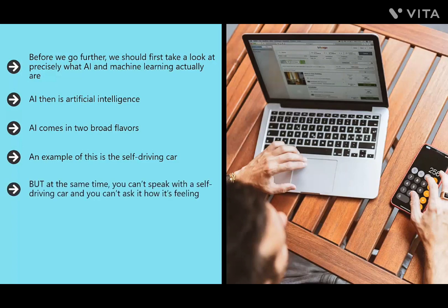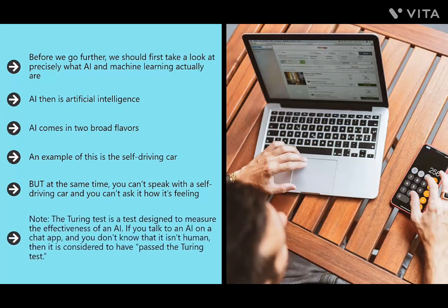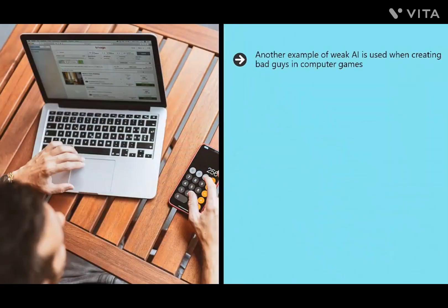But you can't speak with a self-driving car or ask it how it's feeling. A self-driving car would certainly not pass the Turing test — a test designed to measure the effectiveness of an AI. If you talk to an AI on a chat app and don't know it isn't human, it is considered to have passed the Turing test. Another example of weak AI is creating enemies in computer games, which behave in a human-like manner but are only useful in that game context.